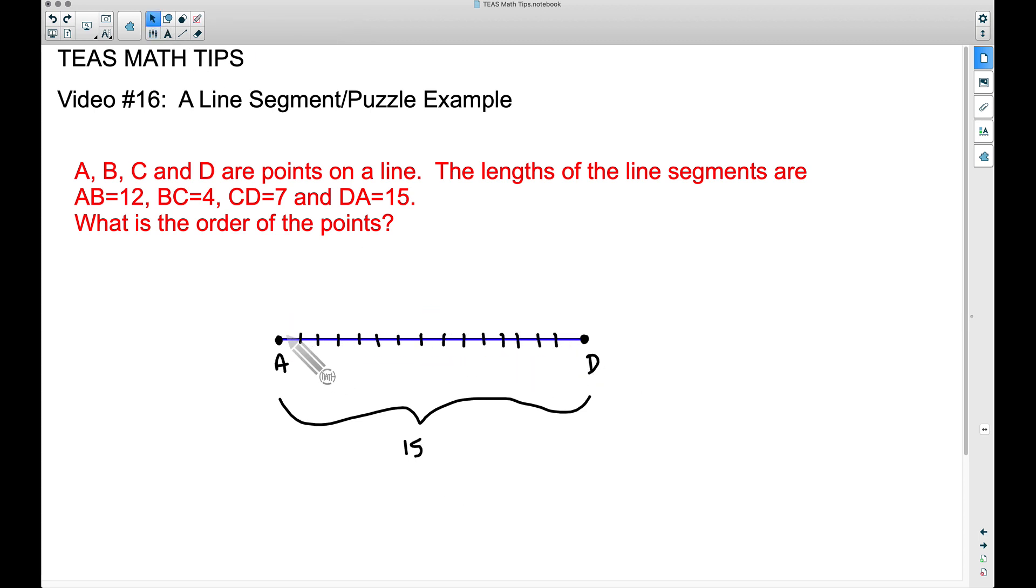So I came in here and I have segments 1, 2, 3, 4, 5, 6, 7, 8, 9, 10, 11, 12, 13, 14, 15. So we got a distance of 15 between these two points.